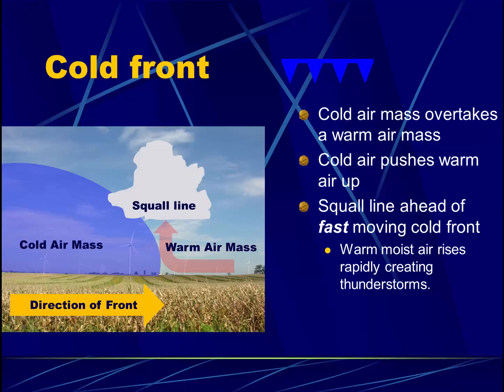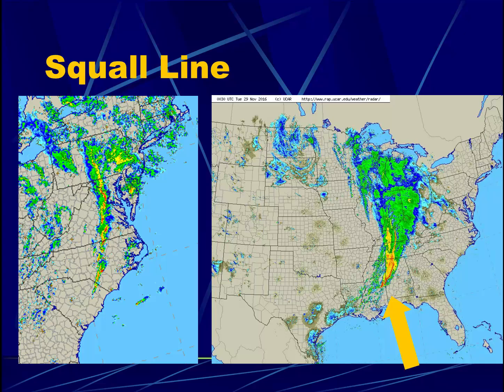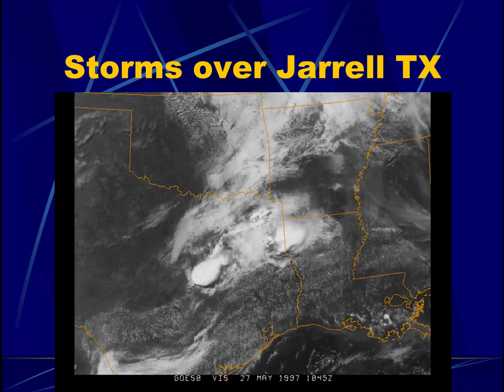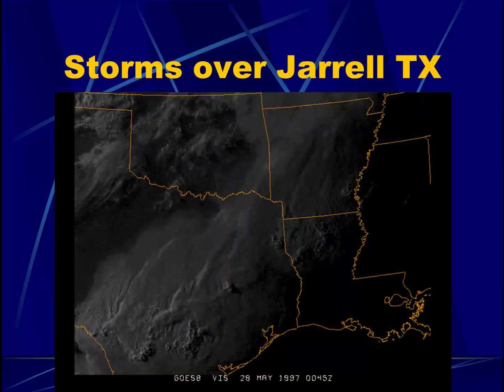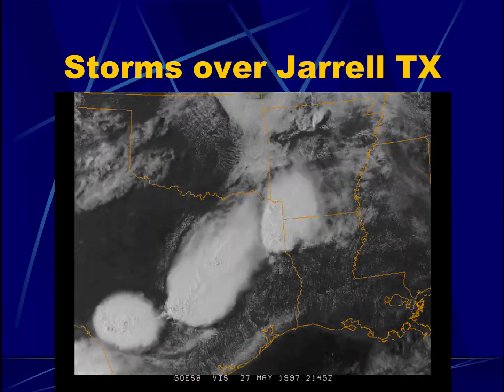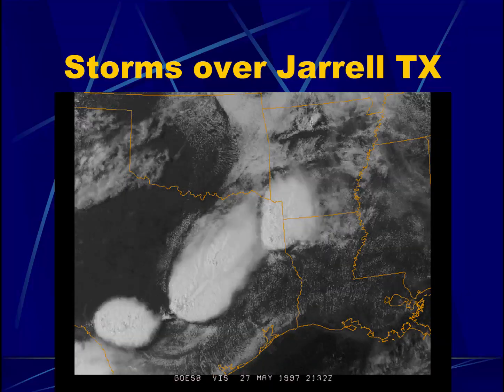The warm, moist air rises rapidly, creating very strong thunderstorms. Here are a couple of radar images that show squall lines. Sometimes the squall lines associated with a cold front can extend from the Gulf of Mexico all the way to Canada. On the left, we see a much shorter squall line extending across several states. Here's a very dramatic squall line — there was cooler dry air coming in from the northwest and warm, moist air out of the Gulf of Mexico, and you can see a very distinct line in the clouds. These storms over Gerald, Texas produced very violent thunderstorms, even tornadoes that produced several fatalities.